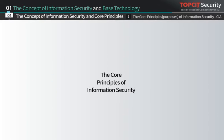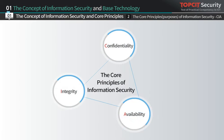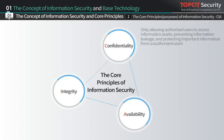The core principles and basic purposes of information security ensure three elements. First, confidentiality is a principle to prevent information leakage by unauthorized users and protect important information by making sure that only users authorized by the information owner have access to the information assets.